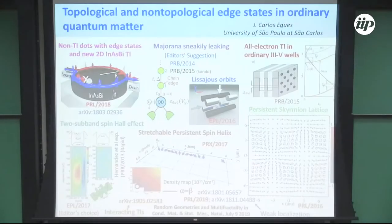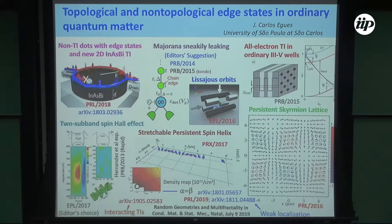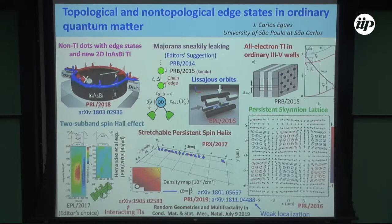As an advertisement, let me show you this view graph. Most of this is related to — there's something also related to localization here — a couple of works done in collaboration with experimental groups of Dominic Zumbühl in Basel and also with David Awschalom, which use weak localization. I also want to emphasize this work here on topological insulating phases in quantum dots.